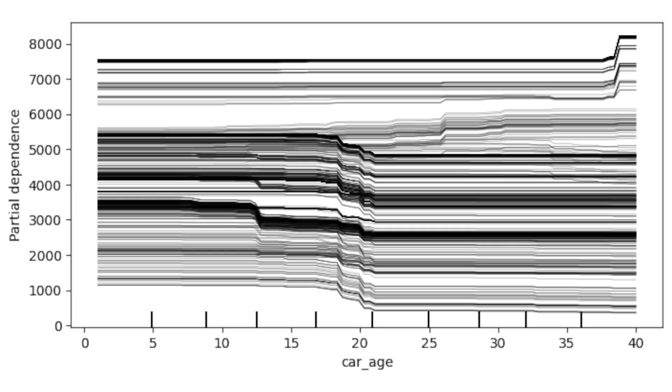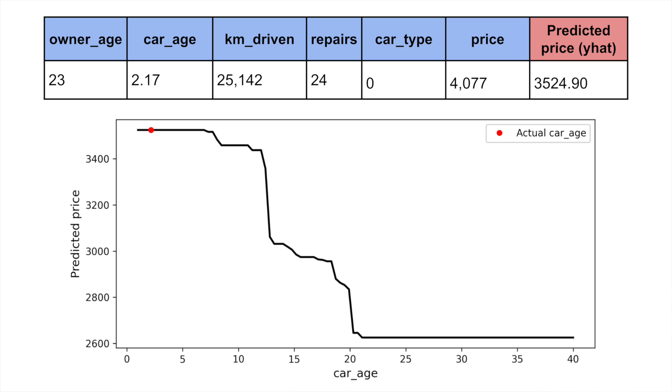In the end, we'll have 1,000 prediction lines, one for every instance in the dataset. To be clear, for each observation, we have only varied car age. We hold the remaining features constant at the original values for the given instance. These will not be the same values we saw for the first instance.